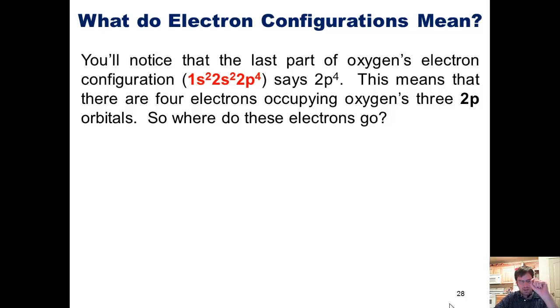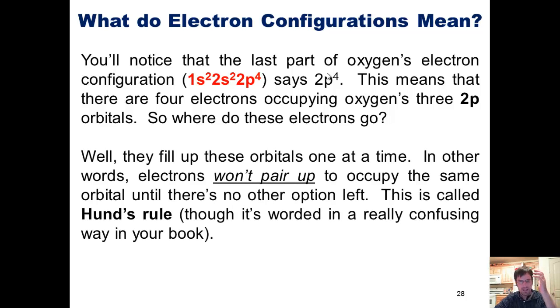Now, you'll notice that the last part of oxygen's electron configuration, 1s2, 2s2, 2p4, says 2p4. This means that there are four electrons occupying oxygen's three 2p orbitals. So where do these electrons go? Well, they fill up these orbitals one at a time. In other words, electrons won't pair up to occupy the same orbital until there's no other option left. This is called Hund's rule, although it's worded in your book in a really baffling manner.